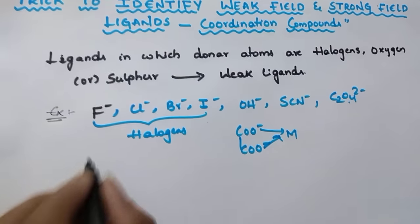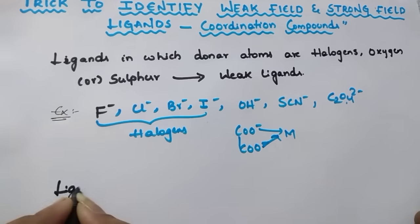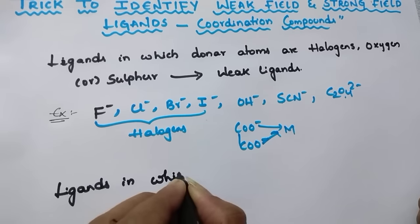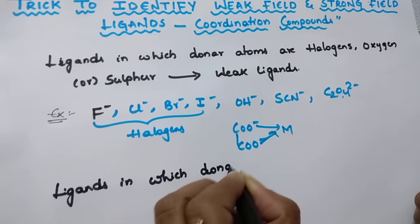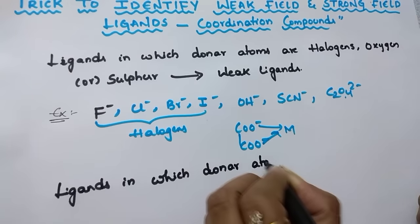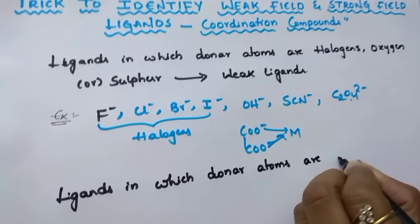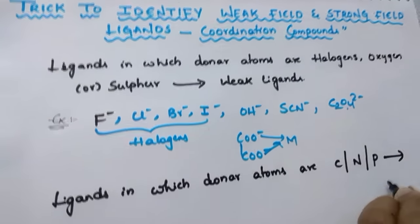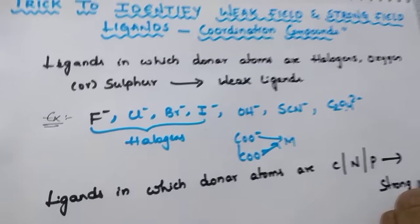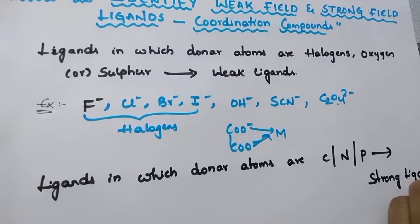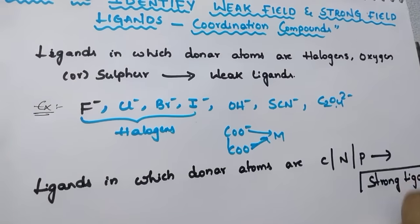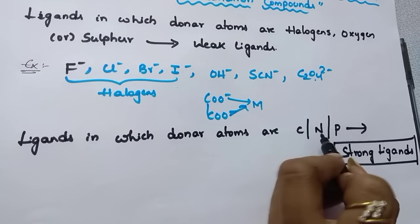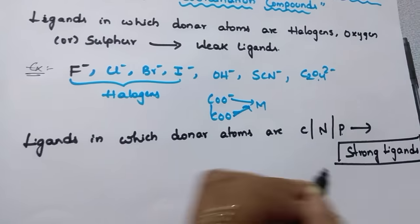Now let us see about strong field ligands. Ligands in which the donor atoms are carbon, nitrogen, or phosphorus generally act as strong field ligands. If the ligand has carbon, nitrogen, or phosphorus as the donor atom, then it acts as a strong field ligand.